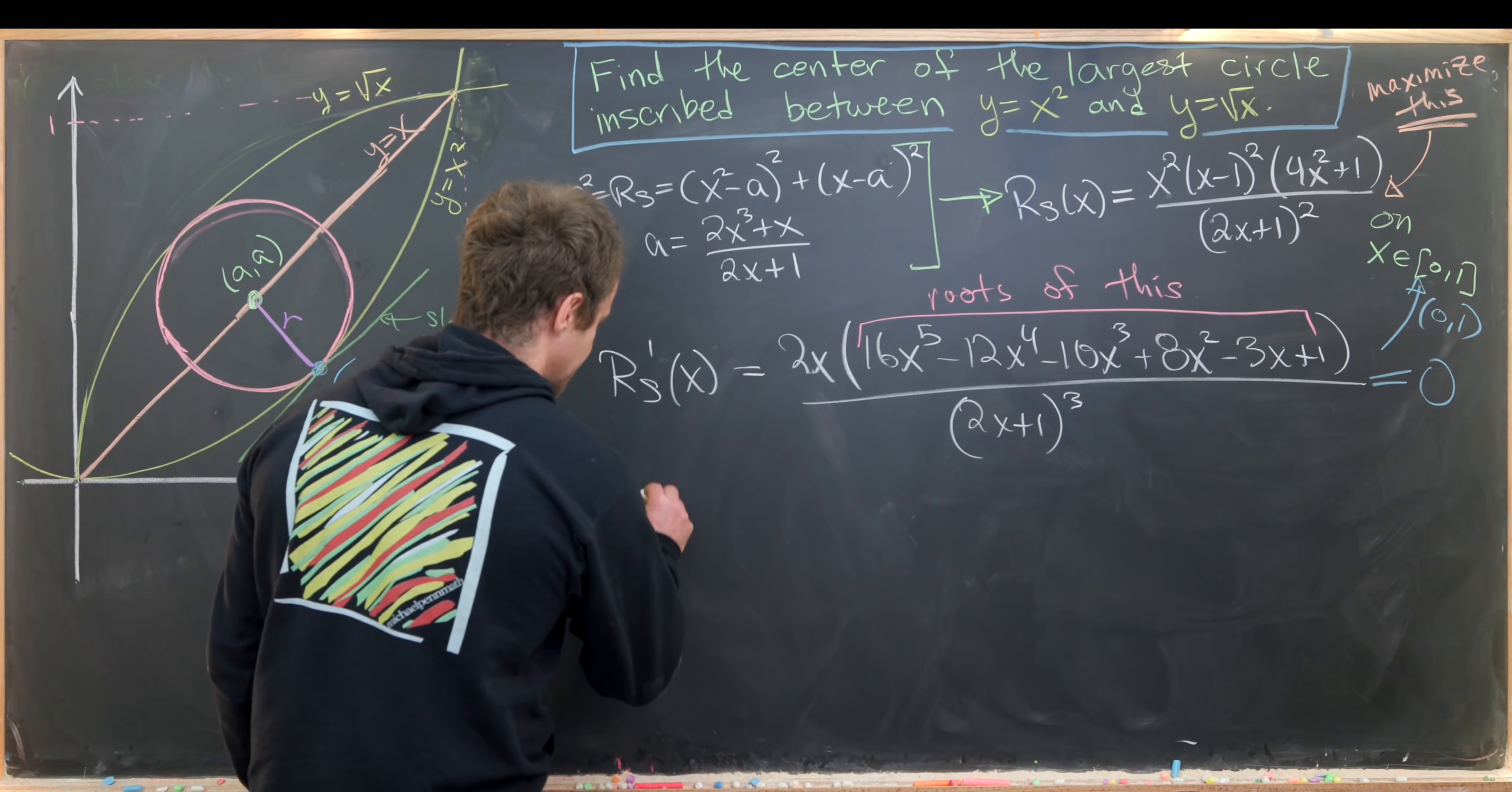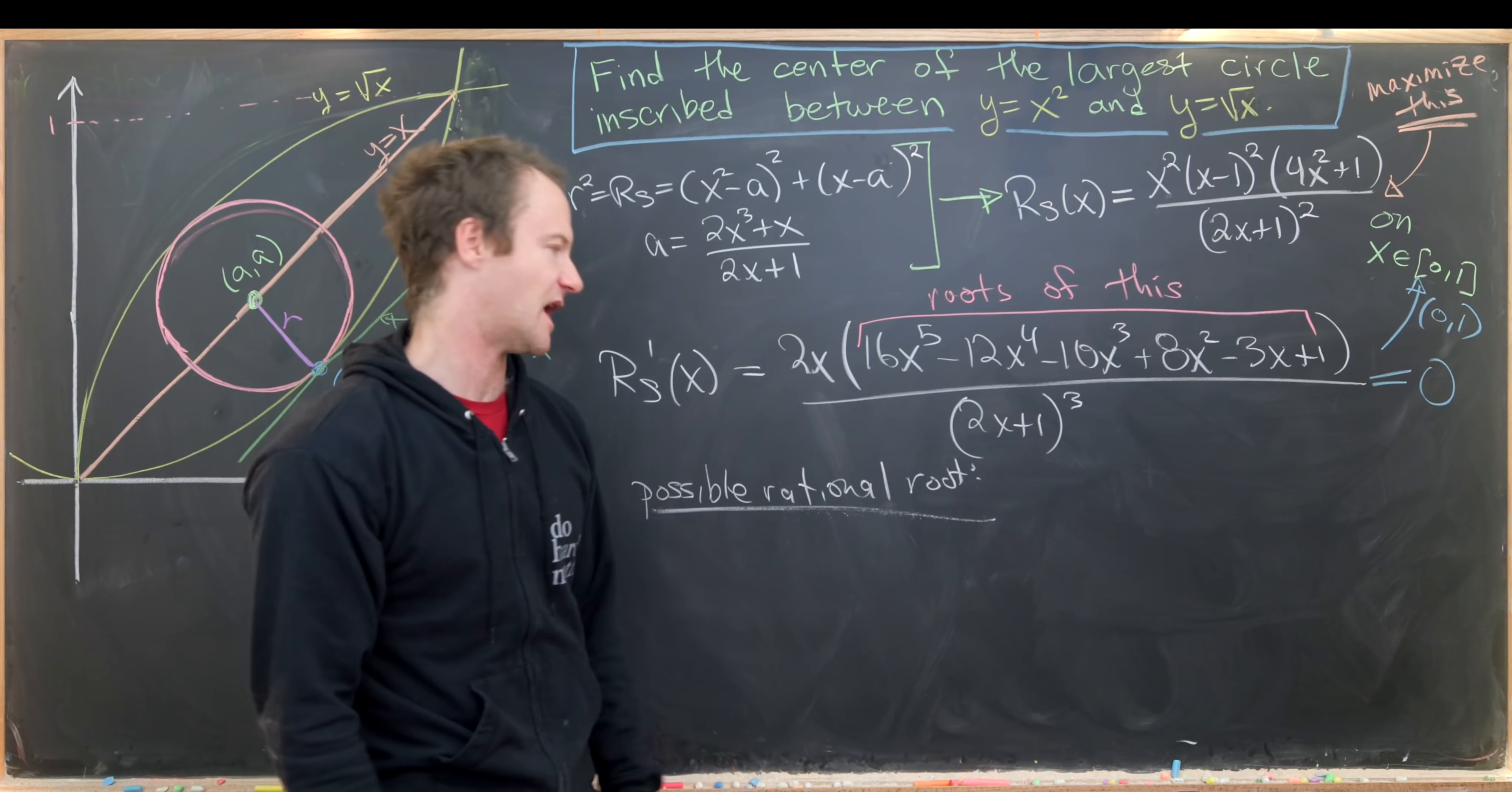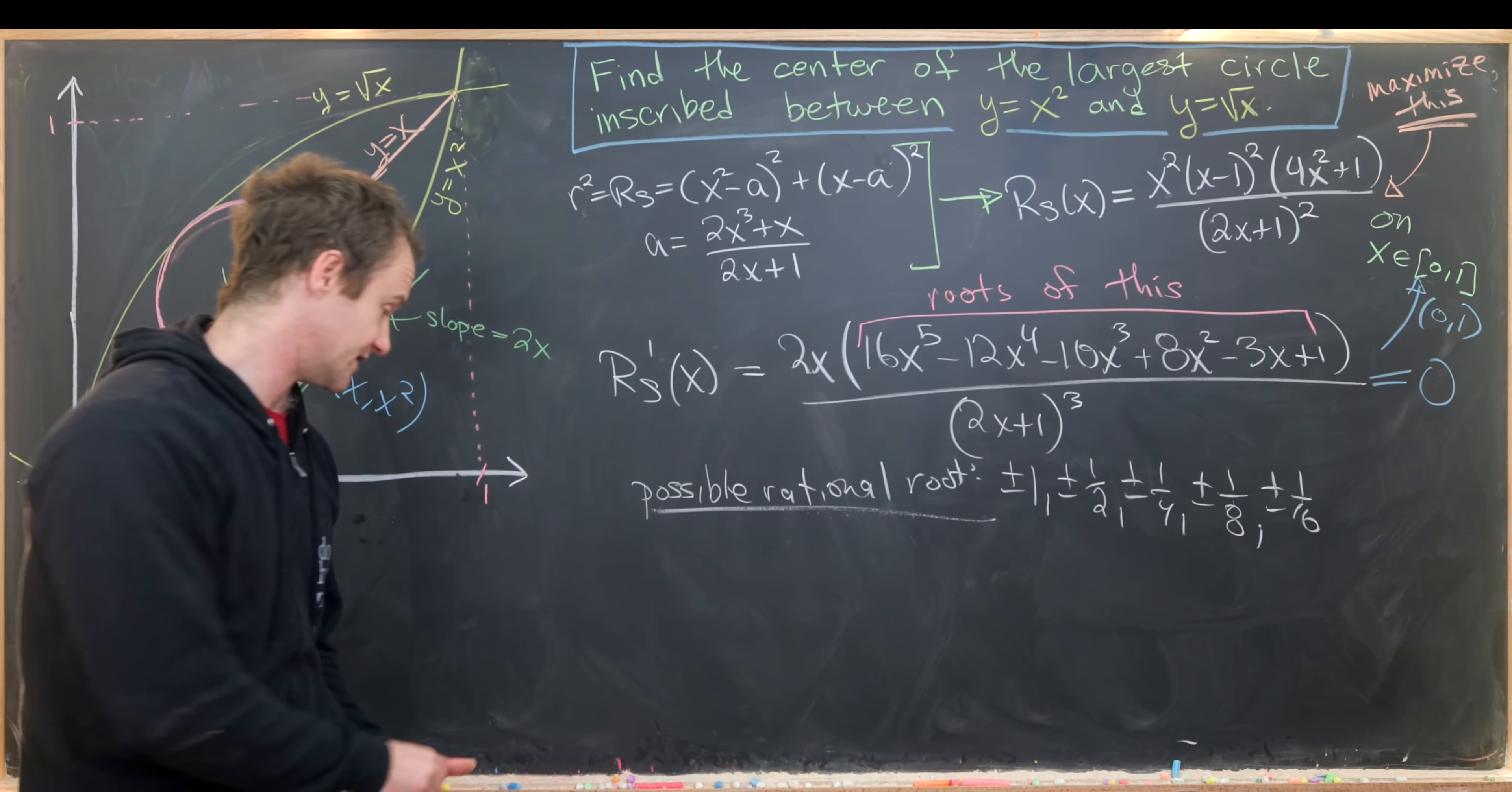The best thing to do is start with the rational root theorem and see if anything comes out. Possible rational roots by the rational root theorem will be all factors of 1 divided by all factors of 16, taking positives and negatives. That's plus minus 1, plus minus half, plus minus quarter, plus minus eighth, and plus minus sixteenth.